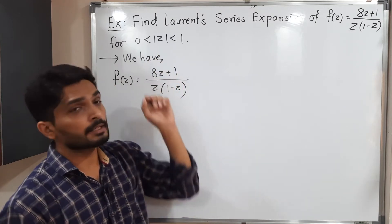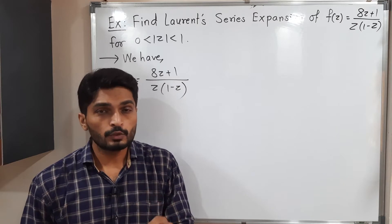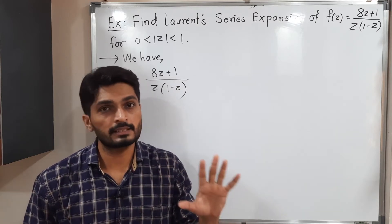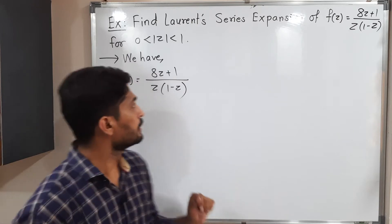As you can see here, |z| is there, so that means the center is origin. Everywhere we simply adjust z only. There is no z minus z₀ or anything. So let us start to do.